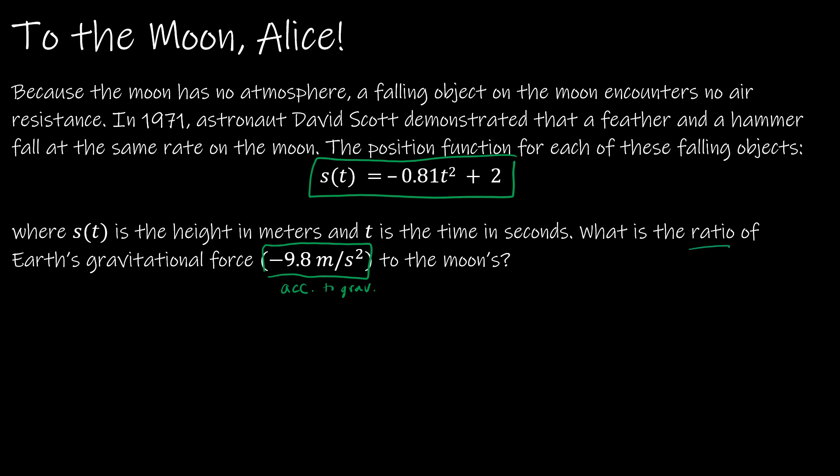We are now being asked to compare the Earth's gravitational force, which is an acceleration due to gravity, to the moon's. So we're trying to find the ratio of the Earth's gravitational force to the moon's. So that means I need to find the moon's gravitational force. So s of t is the position function, negative 0.81 t squared plus 2. This is position. I'm going to find s prime of t, which would be the same as v of t. And that would be using the power rule, 2 times negative 0.81, so negative 1.62 t, and then the derivative of 2 is 0. So this is the velocity function. And if I take the second derivative of s, which is the derivative of negative 1.62 t, I get negative 1.62. So negative 1.62 is the acceleration due to gravity.